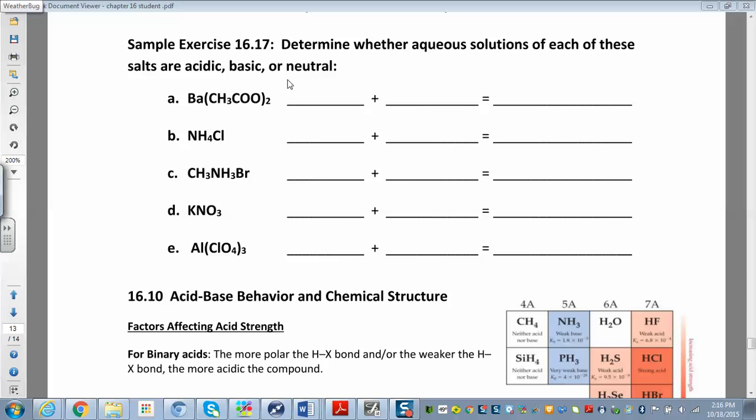I have barium, that's my cation. I'm going to make that barium hydroxide, and there's a 2 there because barium is plus 2. And this is acetic acid, so I have H and then CH3COO. So this is a weak acid and this is a strong base.